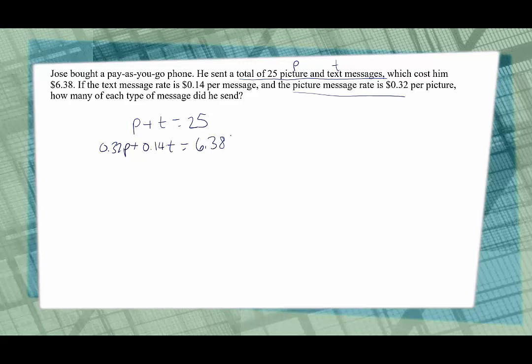I'm probably going to get rid of these decimals. Since they all go to the hundredths place, I'll multiply all three terms by 100. Just to clear those out, we get 32P plus 14T is equal to 638. And now I like using elimination for this, so I'm going to take this top equation and I'm going to multiply all three terms by negative 14. When I multiply by negative 14, I get negative 14P minus 14T is equal to negative 350.